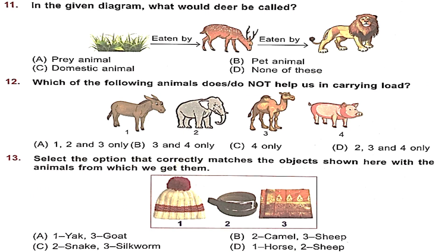Question 11: In the given diagram, grass is eaten by deer and deer is eaten by a lion. What would deer be called? Prey is an animal that is killed and eaten by another animal, who is called predator. Here, deer is the prey and lion is its predator. So Option A, prey animal, is the right answer.